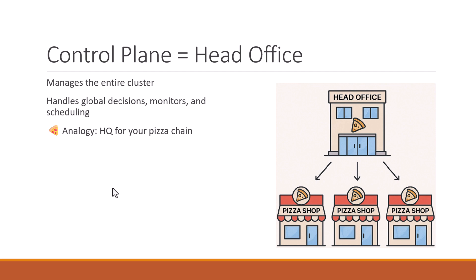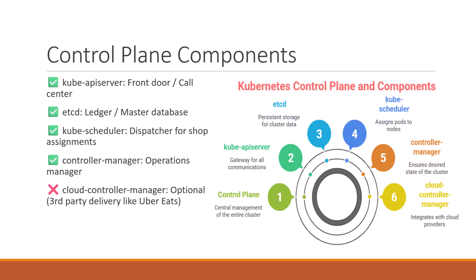Next is the control plane. The control plane is the brain of the cluster. It makes all the decisions, assigns tasks, and keeps everything running smoothly. Just like a pizza chain head office, it does not cook the pizza itself, but it tells every shop what to do, monitors the sales, and handles the orders. Let's break down each part of the control plane using our pizza example.